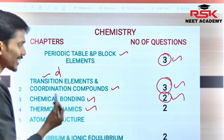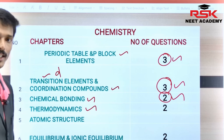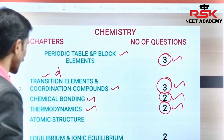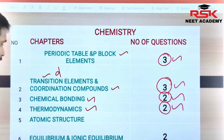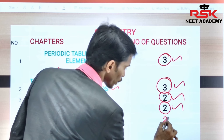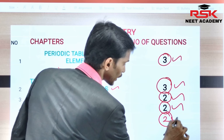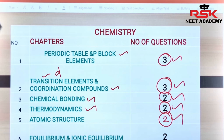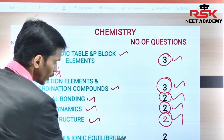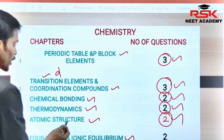Thermodynamics — physical chemistry — two questions are possible. Atomic structure: two questions are possible. Chemical bonding: two questions are possible. Equilibrium and ionic equilibrium, thermodynamics, and atomic structure each carry around two questions.